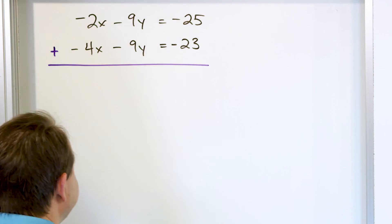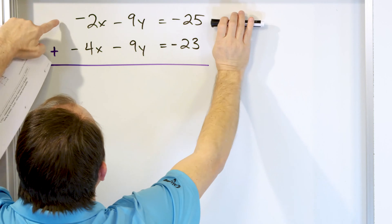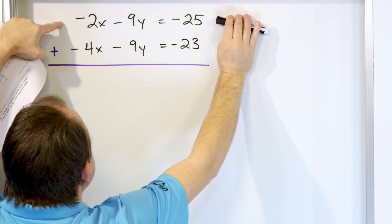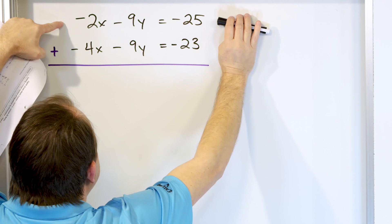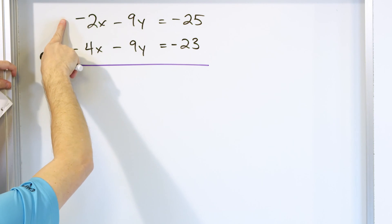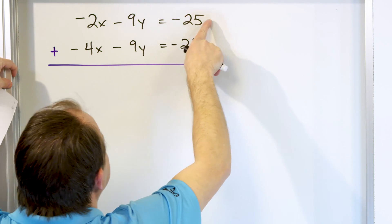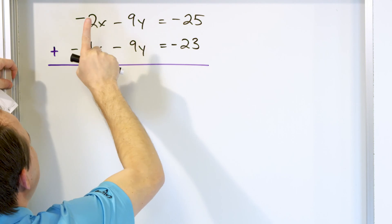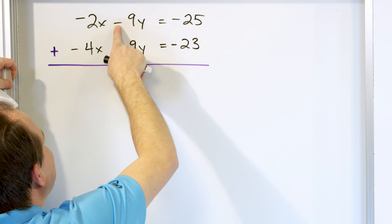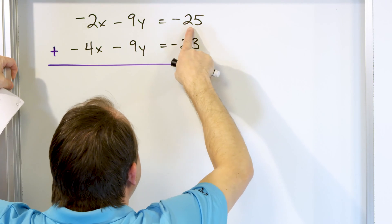So what would happen if we just took this top equation and multiplied it by negative 1? If we multiply by negative 1, it means we multiply the left side by negative 1, and to keep it balanced, we also multiply the right side by negative 1. What will happen is we're going to flip the sign of this term, and it'll be positive 9y here, and positive 2x, and this will be positive 25.